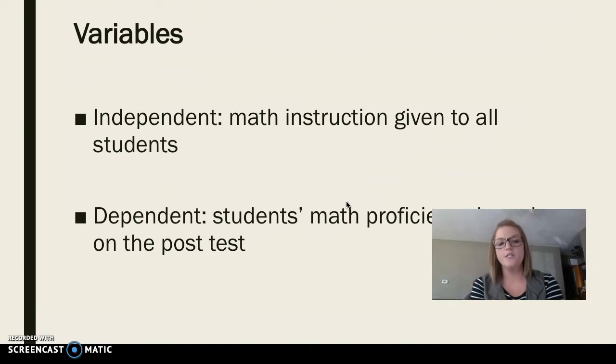The two variables: the independent variable was the math instruction that was given to all students. Both sets of students received the traditional math instruction. The dependent variable was the student's math proficiency based on the post-test.